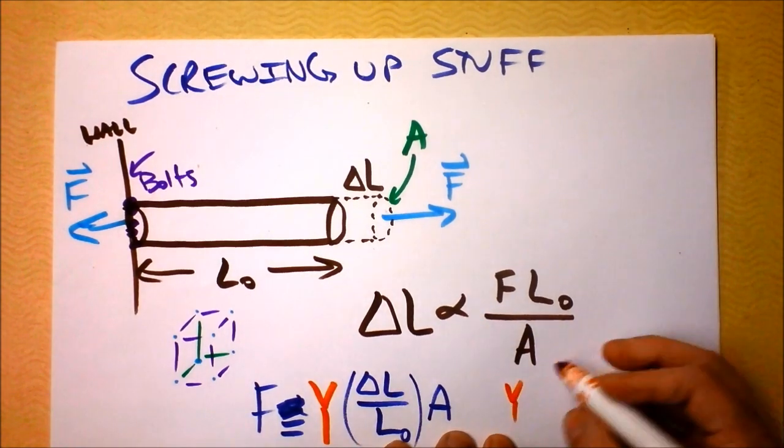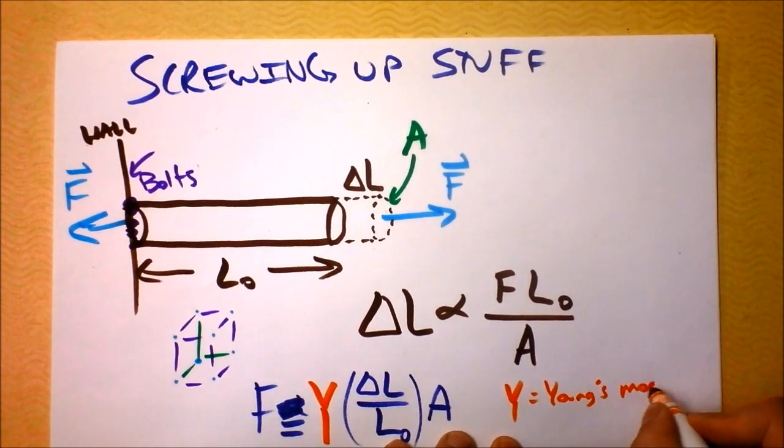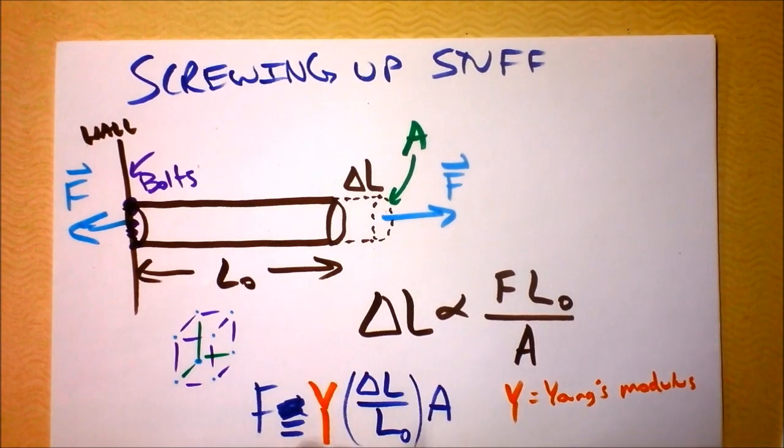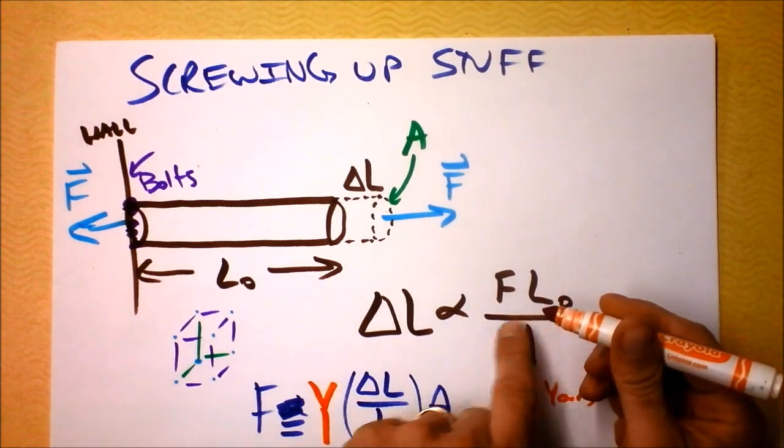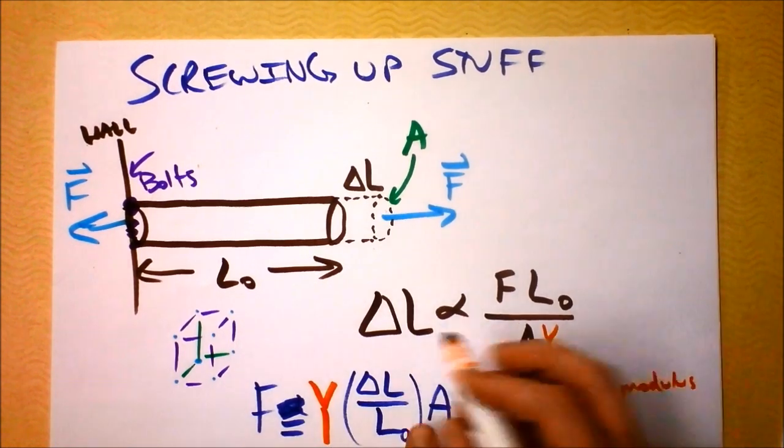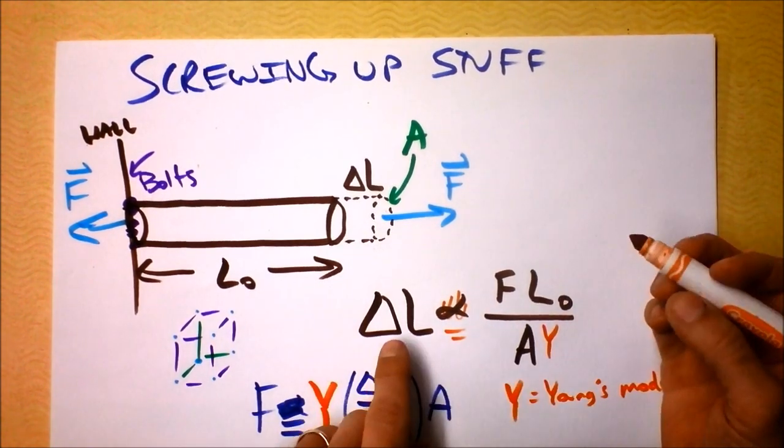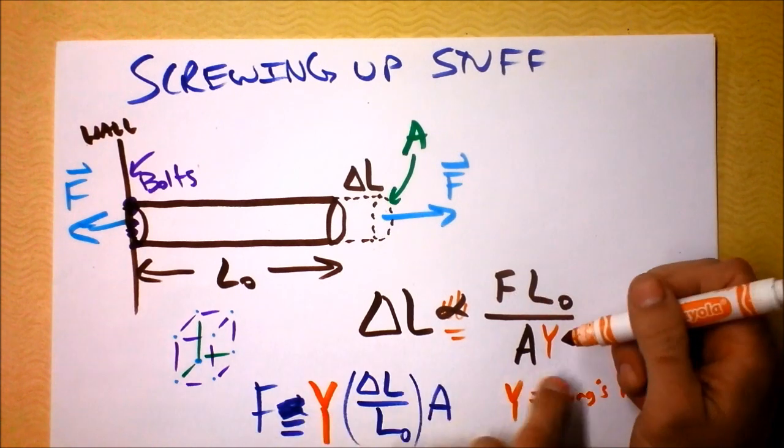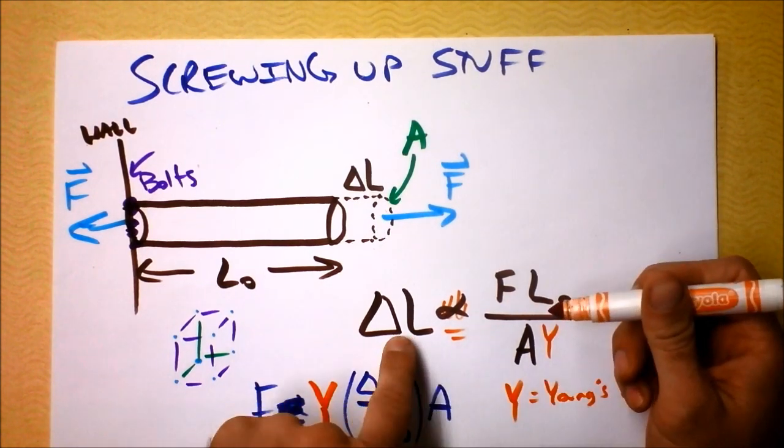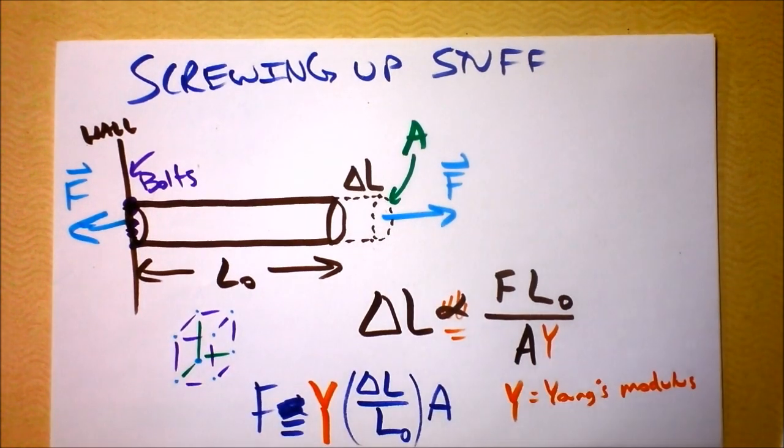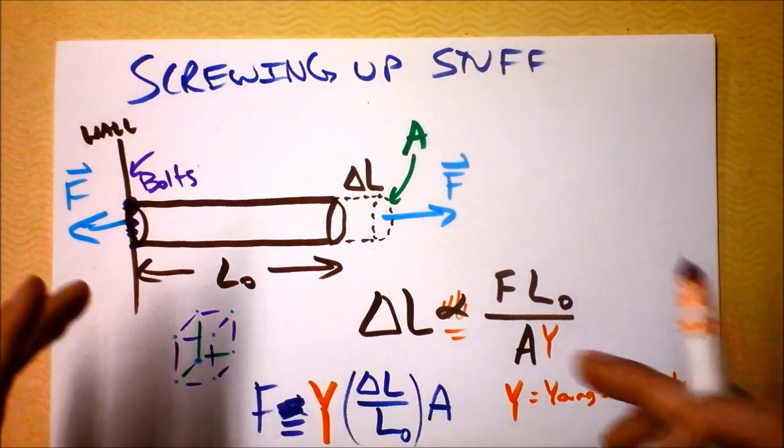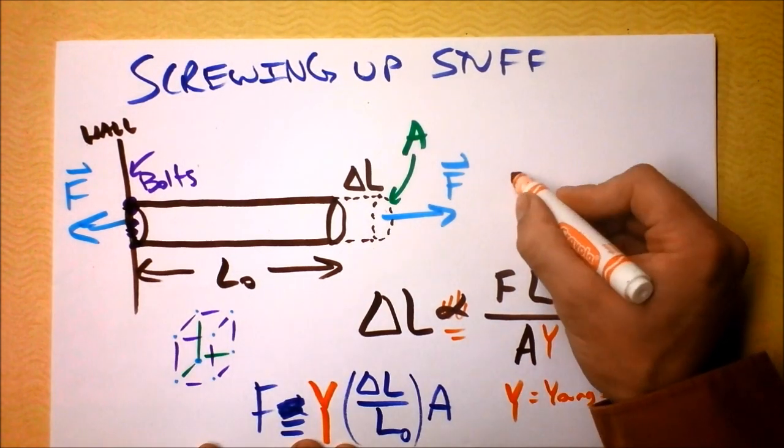Young's modulus tells you, fundamentally, how much the structure does or doesn't like being stretched. If I were to solve it, delta L equals Young's modulus. Big Young's modulus means that delta L will be small. And small Young's modulus means that delta L will be big. So Young's modulus is the toughness of the material. A big Young's modulus describes something that really doesn't want to stretch.